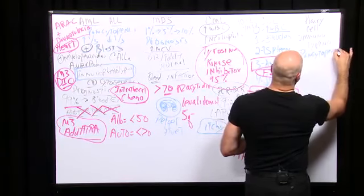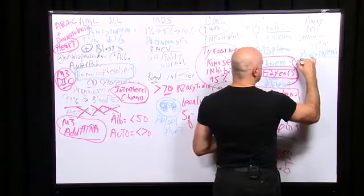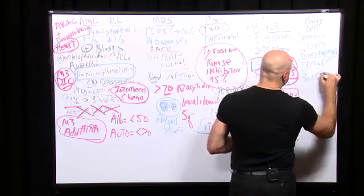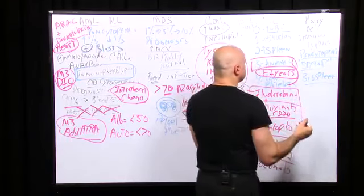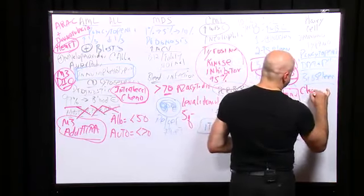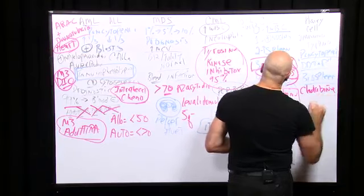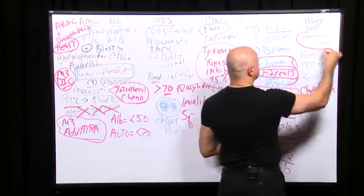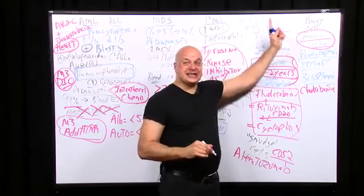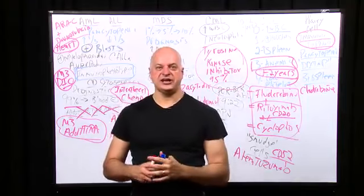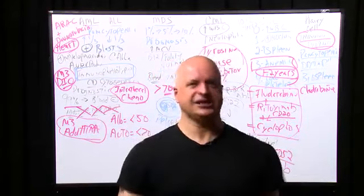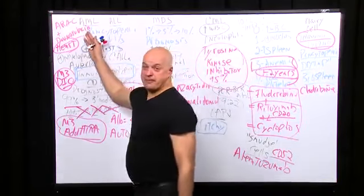Hairy cell leukemia: pancytopenia, dry tap, older patient with big spleen, dry tap — and you see hairy cells. The treatment hasn't changed: cladribine and pentostatin. TRAP is out; immunophenotyping and cell sorting are in. CD11c and other CD markers — CD stands for cluster of differentiation — are how we tell these apart.